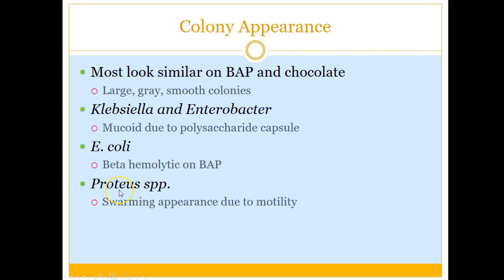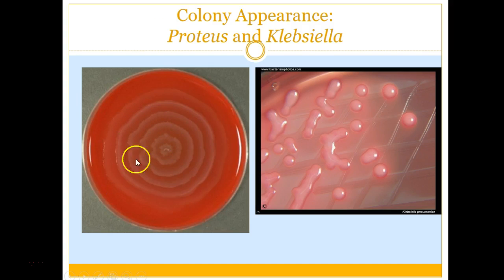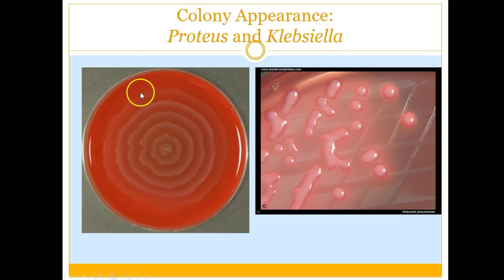Proteus is really neat on an agar plate — it does what we call swarming. It has a lot of motility and basically takes over the entire plate. It can be a pain to work with because if there's anything else on that plate, you can't see it. Here is the Proteus picture on the left — it looks like ripples in water, like if you threw a rock in, it's rippling across the plate.